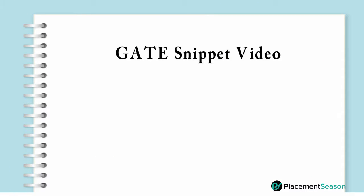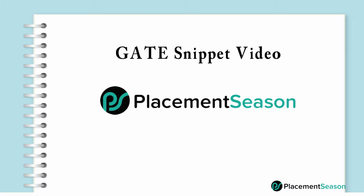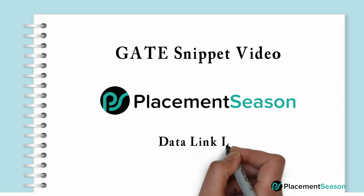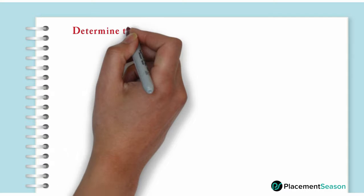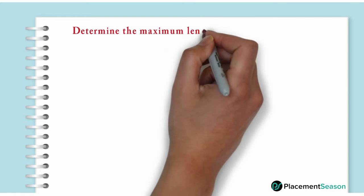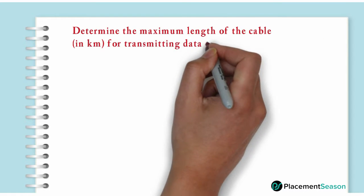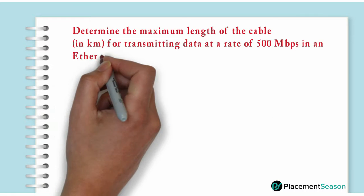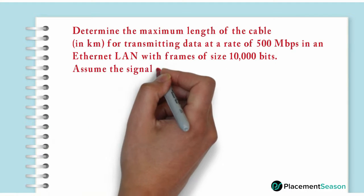Welcome to Gate Snippet video by Placement Season. Today we will solve a question on the data link layer. Determine the maximum length of the cable in kilometers for transmitting data at a rate of 500 Mbps in an Ethernet LAN with frames of size 10,000 bits.